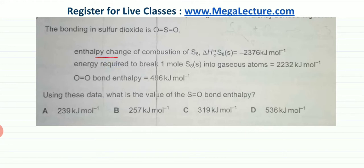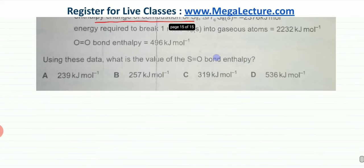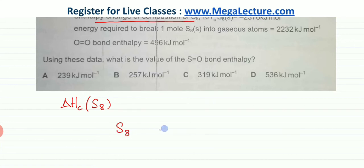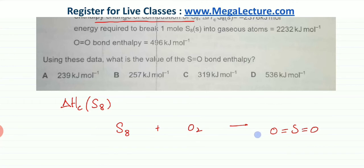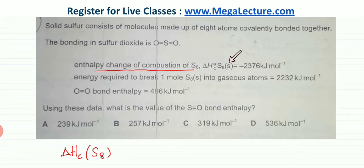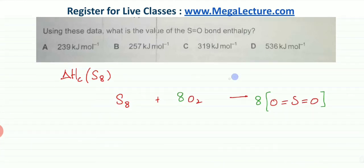To solve this, we need to draw the Hess cycle. Starting with the enthalpy change of combustion of S₈: one mole of S₈ burns in oxygen to produce sulphur dioxide, SO₂. Drawing the structure and balancing: there are 8 sulphurs, so we get 8 SO₂ molecules and need 8 O₂ molecules, giving 16 oxygen atoms total. The enthalpy change of combustion of S₈ is given as -2376 kJ/mol, so this value is already known.